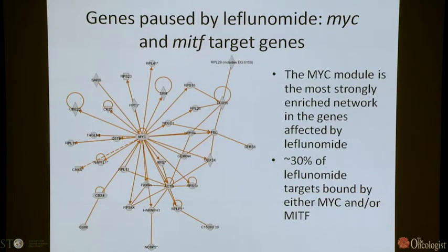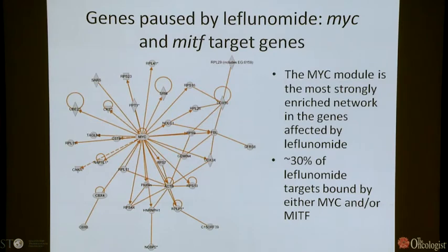There are really two classes of genes very obviously affected by our drug. First are genes bound by the MYC transcription factor — MYC is now known to have a very important role specifically in transcription elongation. The other important class are genes bound by MITF itself. Taken together, both MITF and MYC-bound genes are about 30% of the leflunomide targets. The mechanism by which the drug selectively affects this class of genes is something we're still investigating.